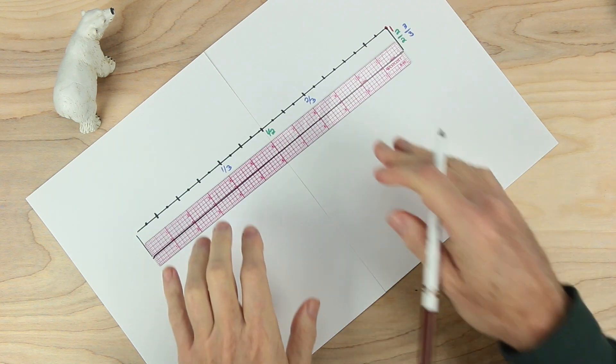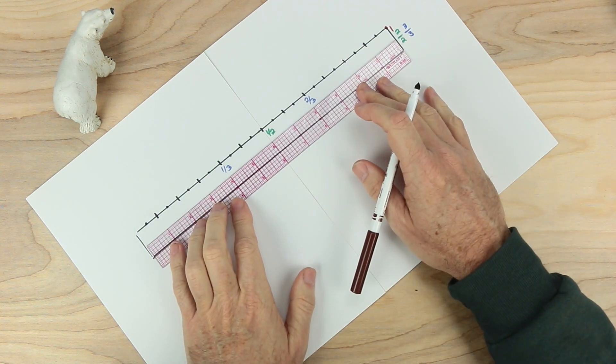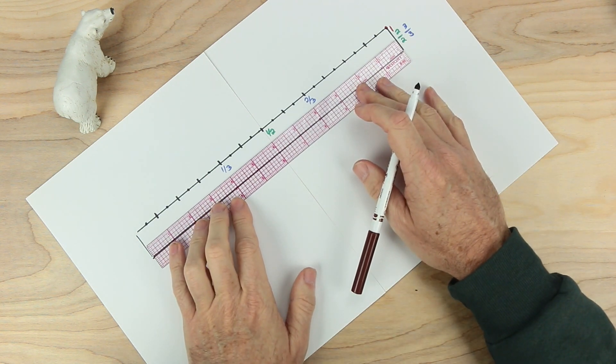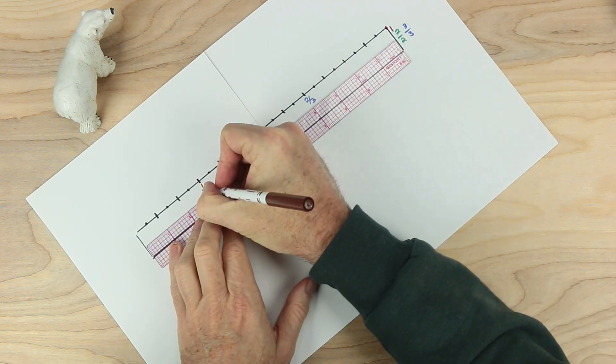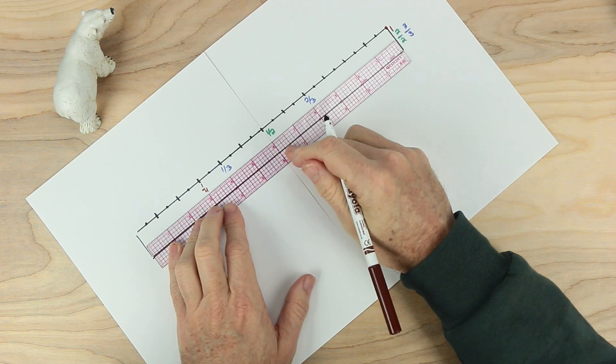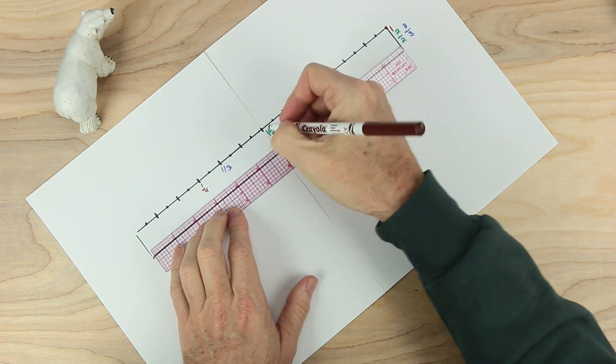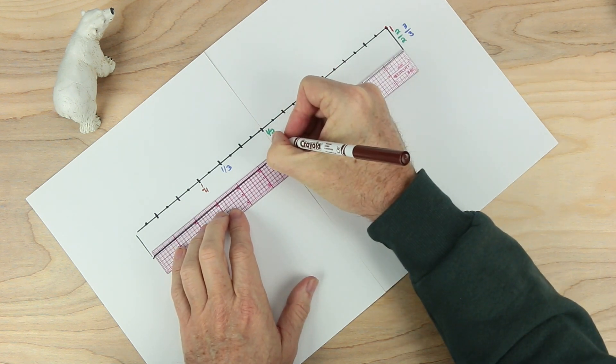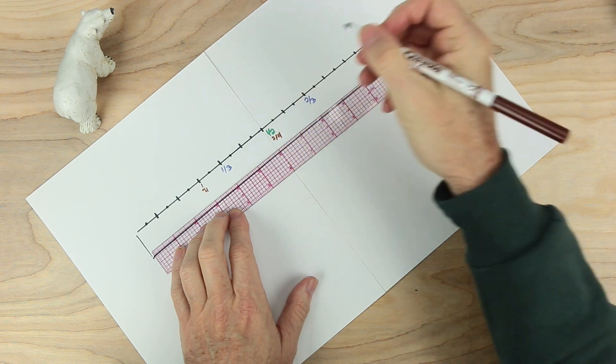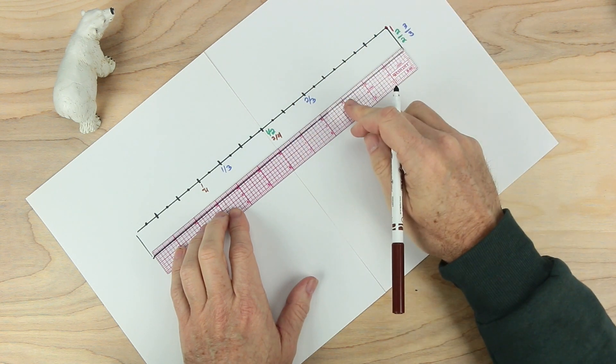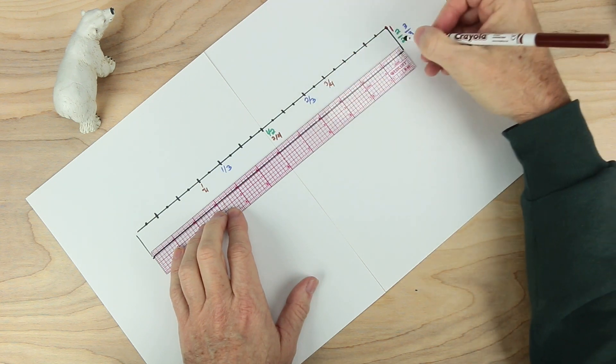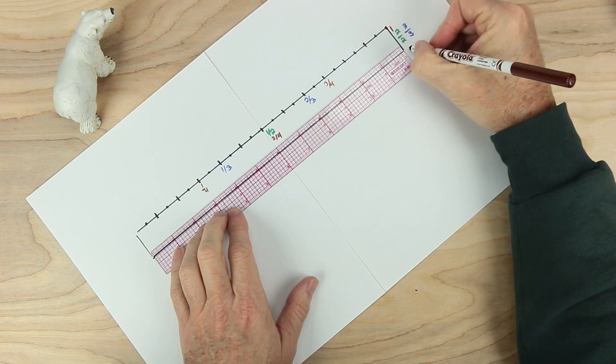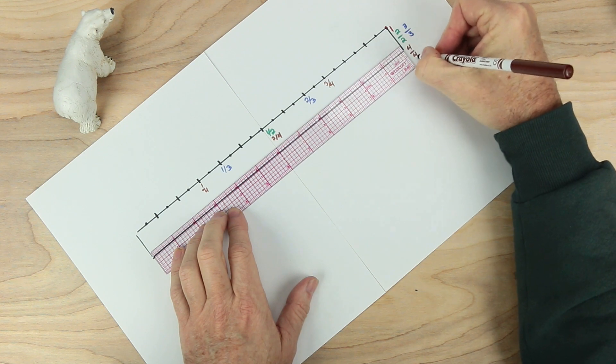Let's go ahead and put in our fourths. Twelve inches, a fourth of twelve inches, twelve divided by four is three. So I'll put one fourth here. Two fourths is going to be three more inches, right here with the half. So this is going to be two fourths. And three more inches is the nine. This is going to be three fourths. And of course, all of them will make four fourths.